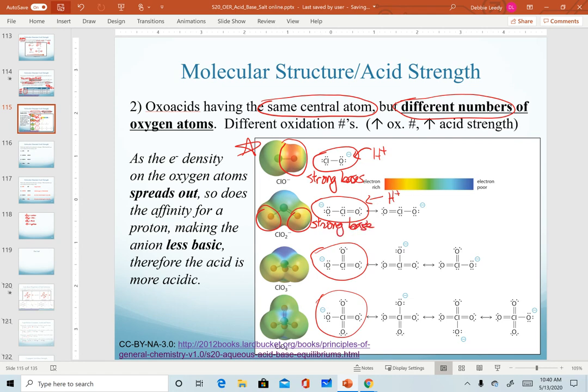Notice once we get to chlorate ClO3 minus, there's less distinct color differentiation. This doesn't necessarily want a hydrogen ion. There's no affinity for the hydrogen ion in chlorate or perchlorate. These are both weak bases.